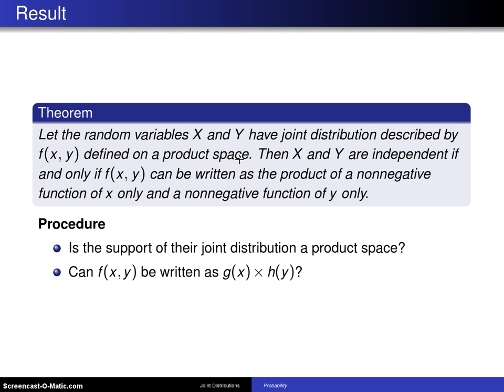These random variables could be discrete or continuous, but in any case, f(x, y) is defined on a product space, and because it's defined on a product space, they might be independent. The usual way to determine independence would be to find the two marginal distributions and see if they multiply to the joint distribution.